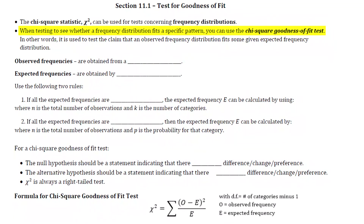There are going to be two types of frequencies in every problem: observed and expected. The observed frequency is the one that comes from a sample, and the expected frequency is the one that comes from a calculation that we'll have to do.